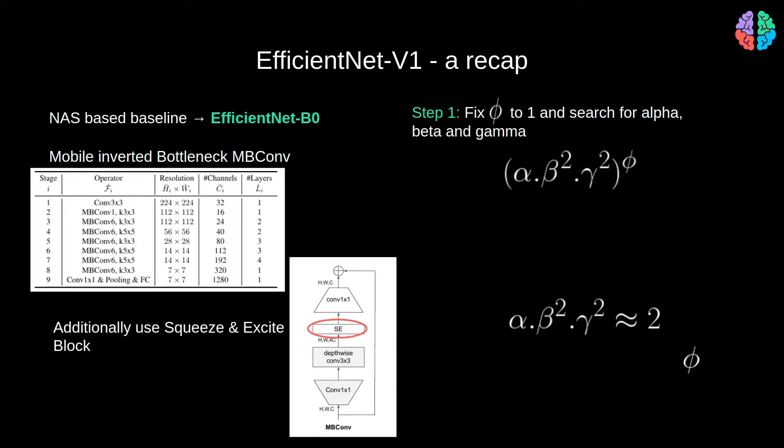With this architecture, we now need to figure out what are the best scales, alpha, beta, and gamma for depth, width, and resolution. As we are going to scale all these together, we need a compound scaling factor phi.